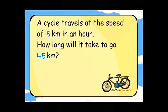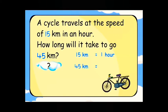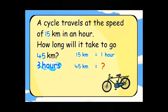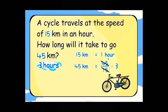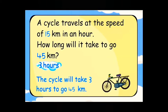A cycle travels at the speed of fifteen kilometres in an hour. How long will it take to go forty-five kilometres? Fifteen kilometres is equal to one hour. Forty-five kilometres is equal to three hours — forty-five divided by fifteen, that is three. The cycle will take three hours to go forty-five kilometres.